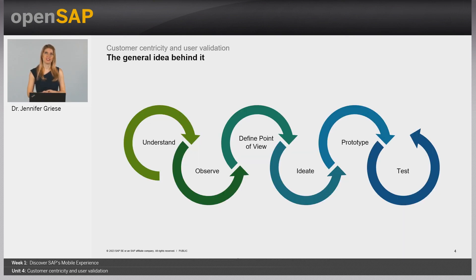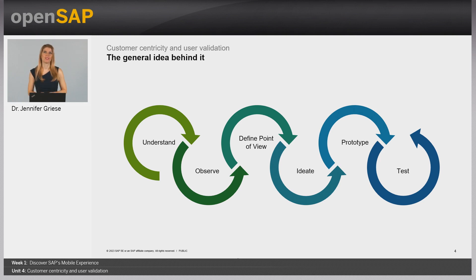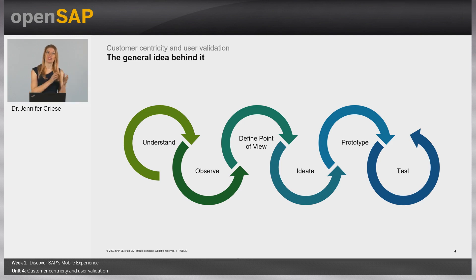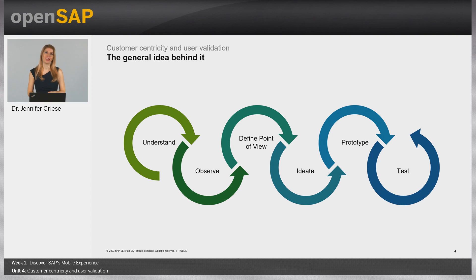All these user research and validation techniques have one thing in common: the general idea is based on design thinking principles. First you need to fully understand the user, their work environment, all the dependencies and processes. Then you come up with a concept to close a gap or improve certain aspects. Only then do you start prototyping and test it again and again in an iterative process, validating it with your potential future users. We do all of this continuously — after the study is before the study — because there is always more to learn and validate to make sure we stay exactly on track to build exactly what's needed.